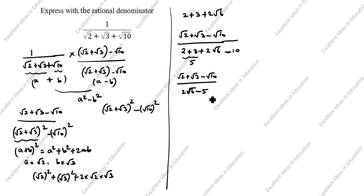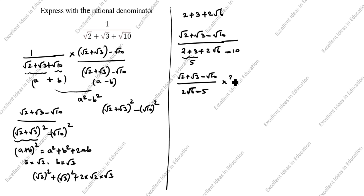You see in the denominator root 6 is still an irrational number, and we need to change that. What we will do is rationalize the denominator again. Since here is minus, we will multiply by (2 root 6 plus 5) over (2 root 6 plus 5).